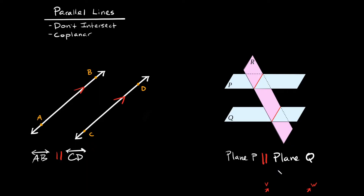Now let's combine lines and planes. Lines V and W are going in the same direction, they'll never intersect, and they're both on plane P — so those two lines are parallel. Similarly, lines Y and Z are both on plane Q, so those two are also parallel.